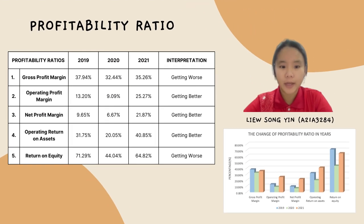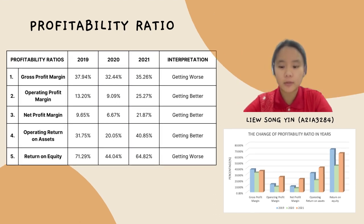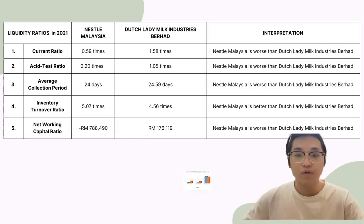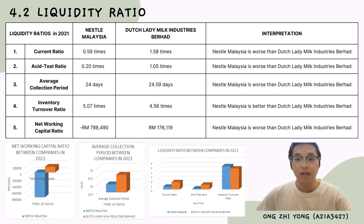Lastly, profitability ratio in Dutch Lady — all profitability ratios decreased in 2020 and increased in 2021. I will continue the presentation with the liquidity ratio comparison. Before that, I would like to introduce myself. My name is Ong Ziyong and my metric number is A213427.